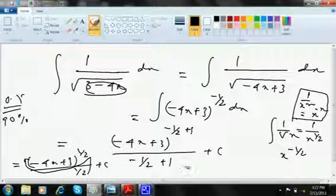So it will look like 2 into minus 4x plus 3 to the power 1 by 2. 1 by 2 I can write like a root over. That's it. This is plus c.